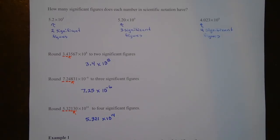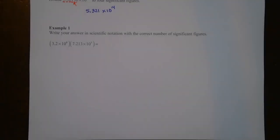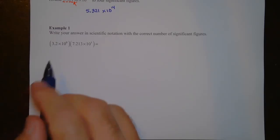However many significant figures a number has, when we write it in scientific notation we need to have the same number of significant figures. Now let's do the first example — I'm going to show you how to multiply numbers in scientific notation and write the answer with the correct number of significant figures.